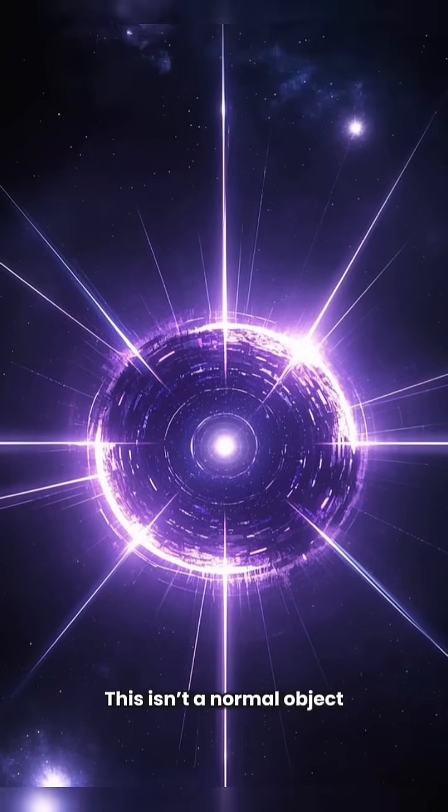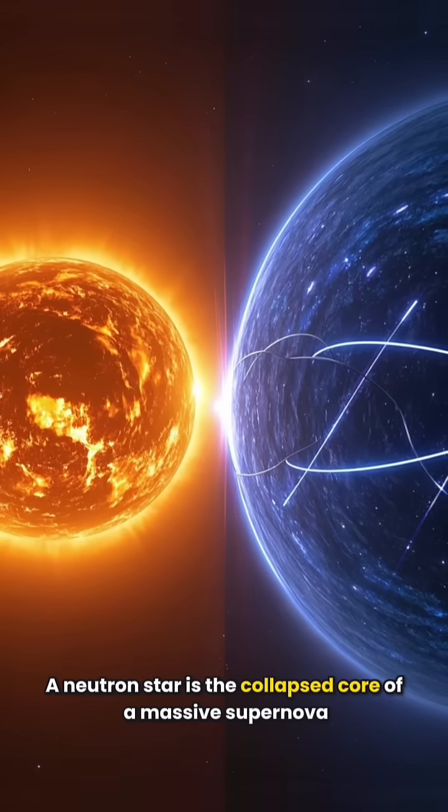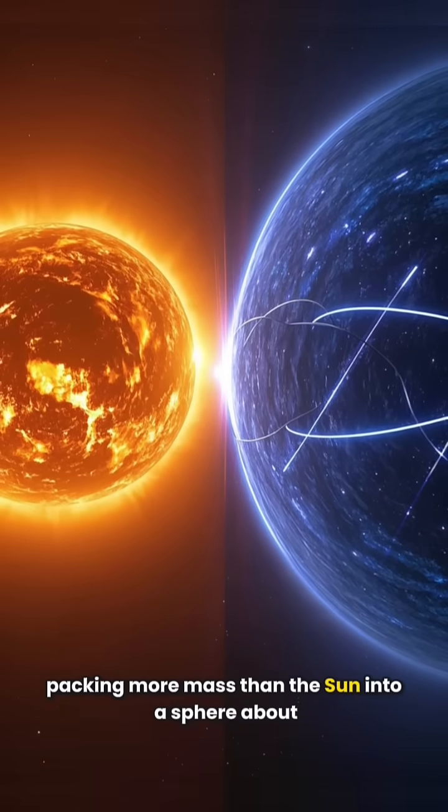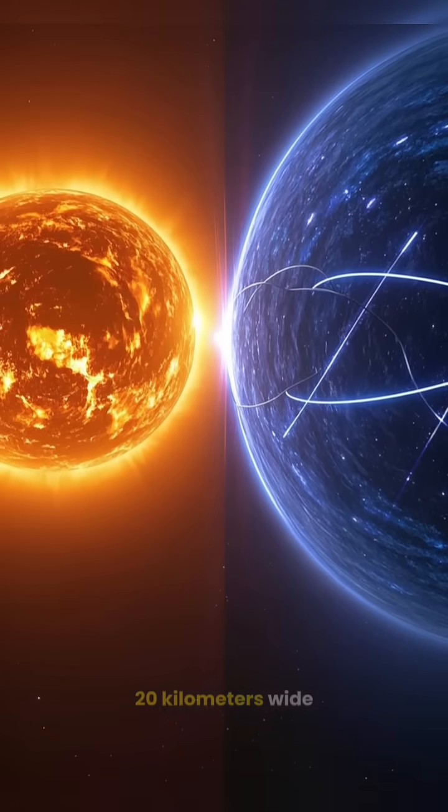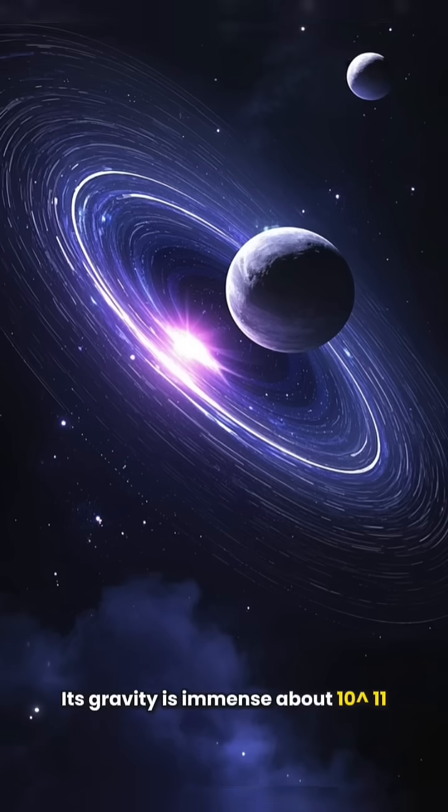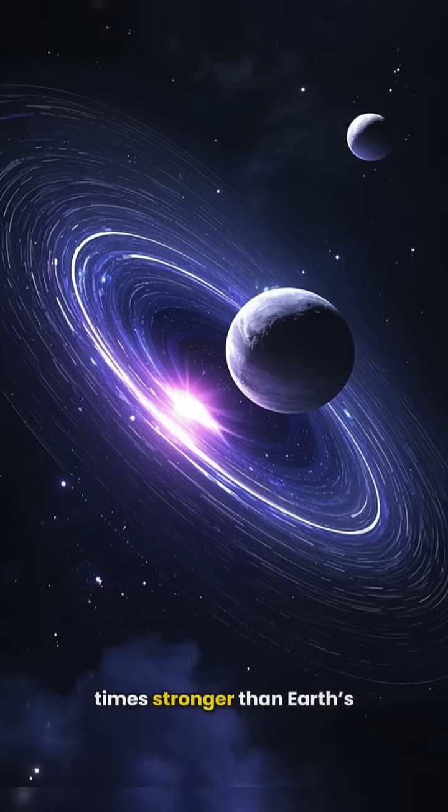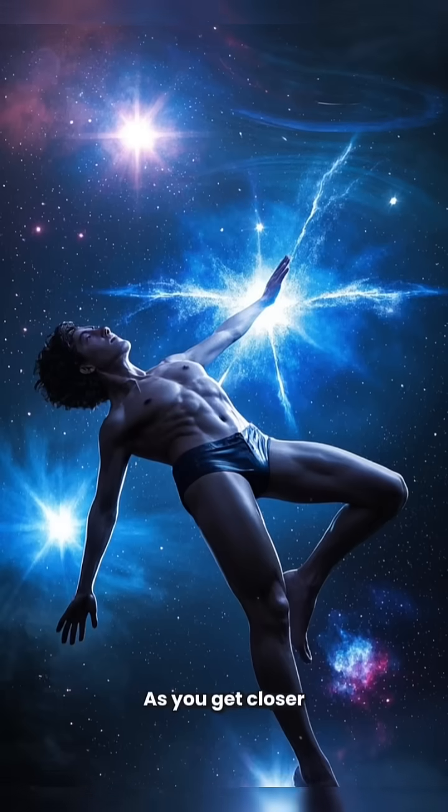This isn't a normal object. A neutron star is the collapsed core of a massive supernova, packing more mass than the sun into a sphere about 20 kilometers wide. Its gravity is immense, about 10^11 times stronger than Earth's. As you get closer,